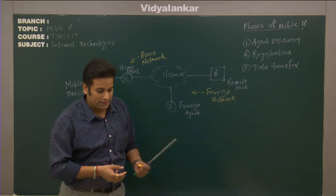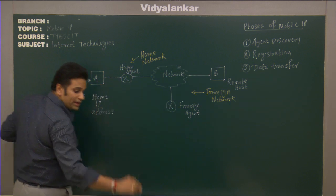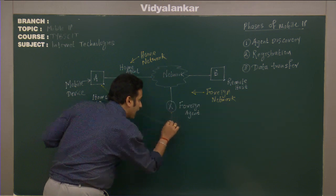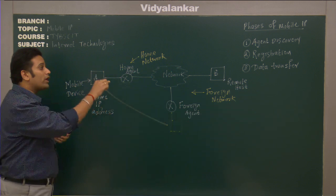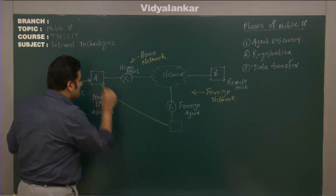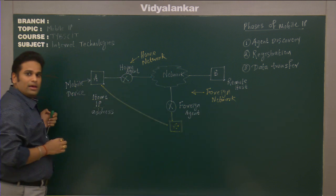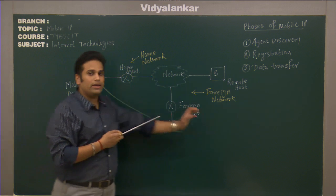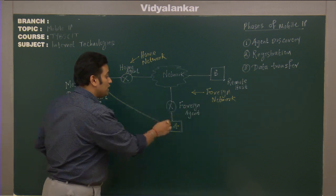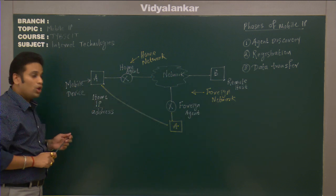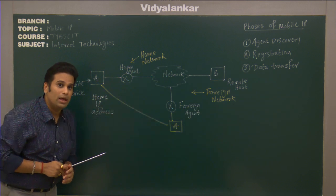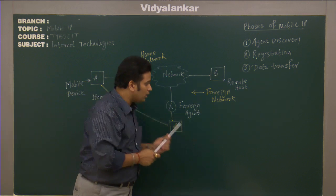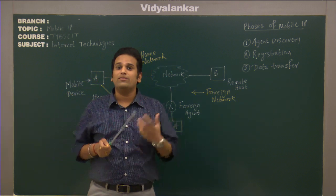In future it may happen that this particular node shifts from its home network to some other network, which is known as a foreign network. Device A is now shifted from its home network to a foreign network — for example, from Mumbai to Delhi. The IP which was assigned to machine A was for its home network, known as the permanent home IP address. But when the device shifts to a foreign network, that machine should be assigned a new IP.